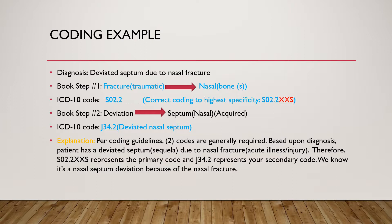In our next book step, we're going to look at the deviation of the septum. We'll start at Deviation, then drill down to Septum. Keep in mind there are several septums that can be coded, but we're going to look for the one specific to the nasal, since this deviation is due to the nasal fracture. We go: Deviation → Septum → Nasal → Acquired, because the patient acquired this deviated septum due to the nasal fracture. Our ICD-10 code should be J34.2 for the deviated nasal septum.